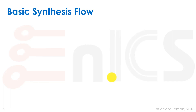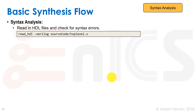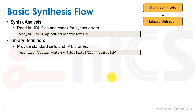Let's look at a basic synthesis flow. We start with syntax analysis — reading in the hardware description language files and checking for syntax errors. In Cadence Genus, that's done with the read_hdl command. The next stage — library definition — tells the synthesis tool what our technology is, what our leaf cells are, what types of IPs we have, and so forth. We do that with a command such as read_libs, which reads a file with a .lib extension — the liberty file.